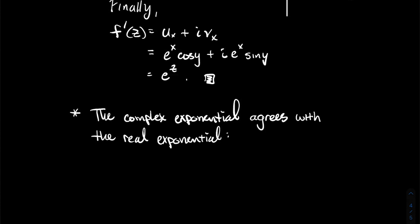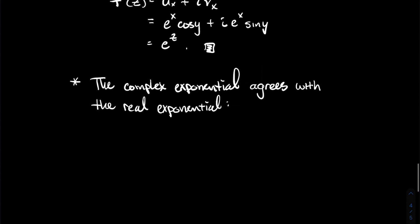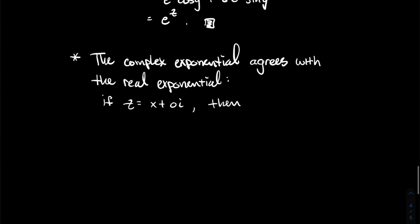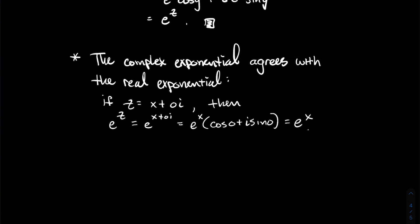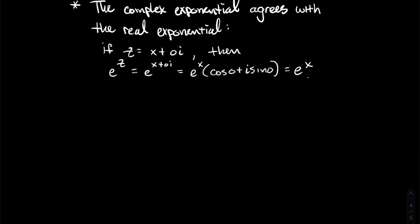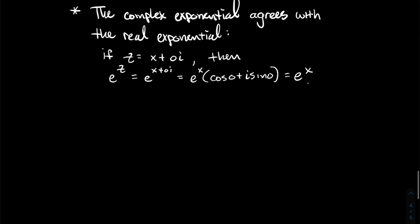One more thing: the complex exponential agrees with the real exponential. If you plug in a real number — something of the form x + 0i — we should recover the real exponential. Let's check: e^z with z = x + 0i gives e^x (cos 0 + i sin 0) = e^x · 1 = e^x. So e^z equals e^x whenever z equals x. The complex exponential agrees with the real exponential for real inputs.